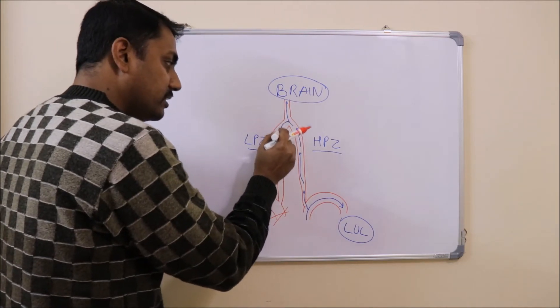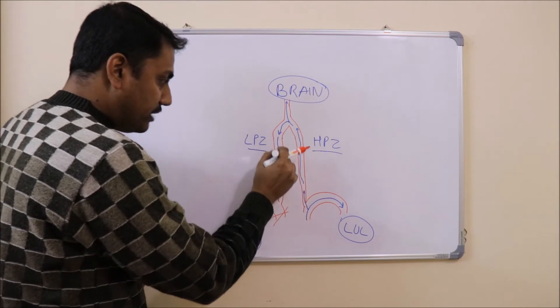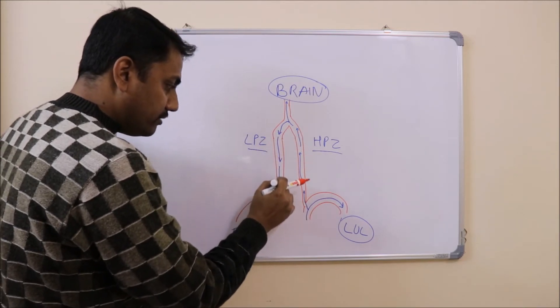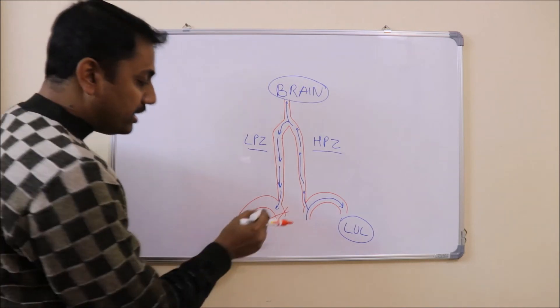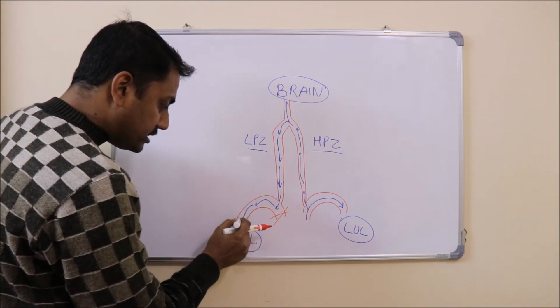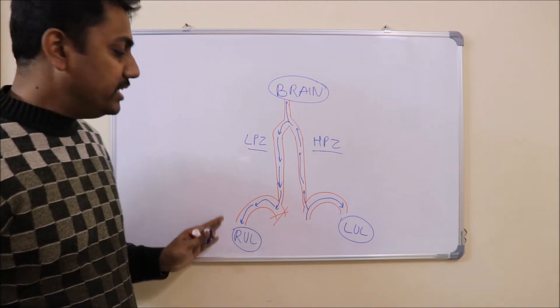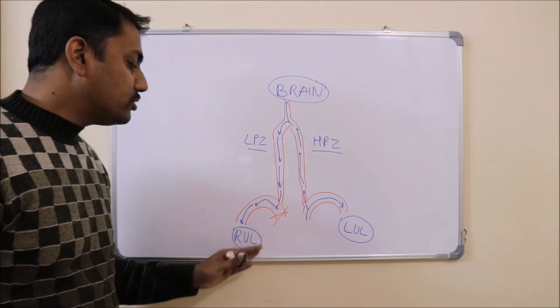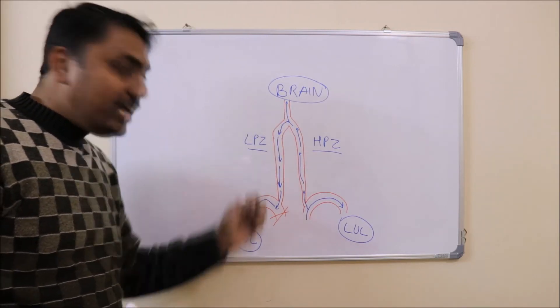There will be a retrograde flow of blood into the right upper limb. So in this way the right upper limb also gets blood supply through stealing of blood from the left side.